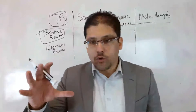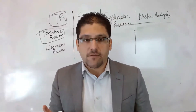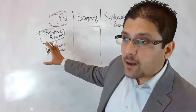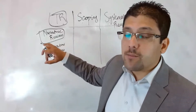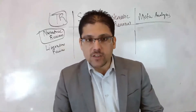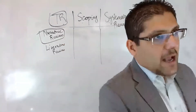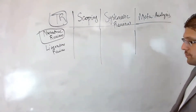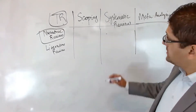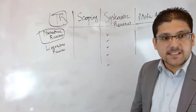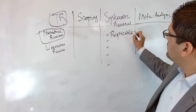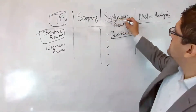If everyone is given the same topic to write a traditional review, all of you will produce different papers with different results — that is the problem with traditional review. A systematic review is different: if all of you write a systematic review, you will all get the same results. That is the purpose of creating a systematic review — to create a methodology that is repeatable and replicable.